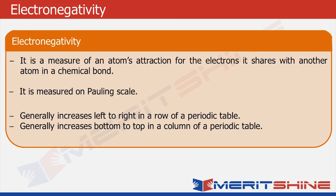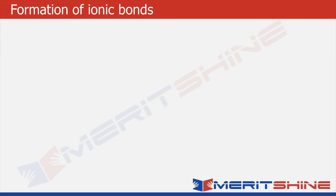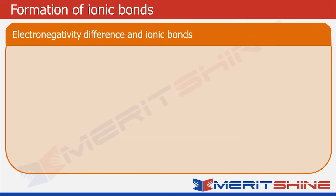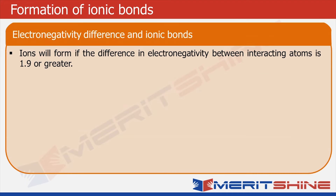Electronegativity generally increases from left to right in a row of the periodic table and from bottom to top in a column of the periodic table. As a rough guideline, ions will form if the difference in electronegativity between interacting atoms is 1.9 or greater.